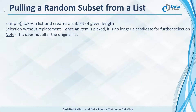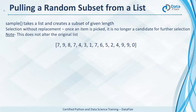Choices picks random values with replacement, but sample does so without. With choices, every time an item is picked it can still be picked again. But with sample, it is no longer a candidate for further selection — it will only appear once in the list of choices. Sample also does not alter the original list. If we sample 7 values from a list, we get those 7 unique values.